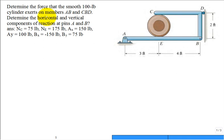So let's solve this problem. It asks, determine the force that a smooth 100-pound cylinder exerts on members AB and CD.